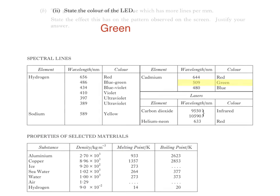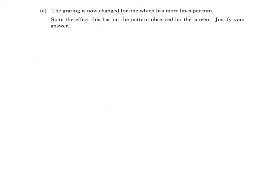Part B says the grating has now changed for one which has more lines per millimetre. State the effect this has on the pattern observed on the screen. Justify your answer. So we'll start with the equation we used before, but this time rearrange it so that sine theta is the subject. We now have sine theta is equal to m lambda divided by d.